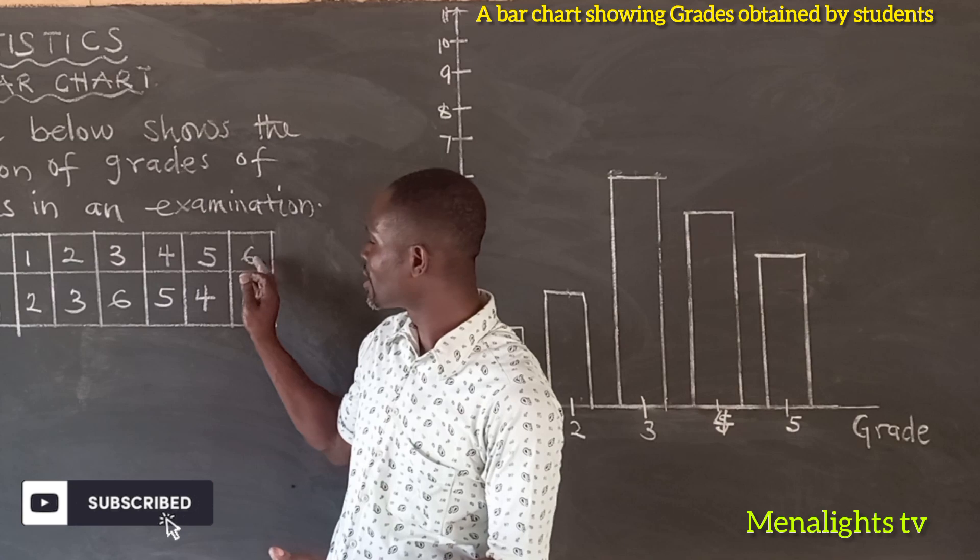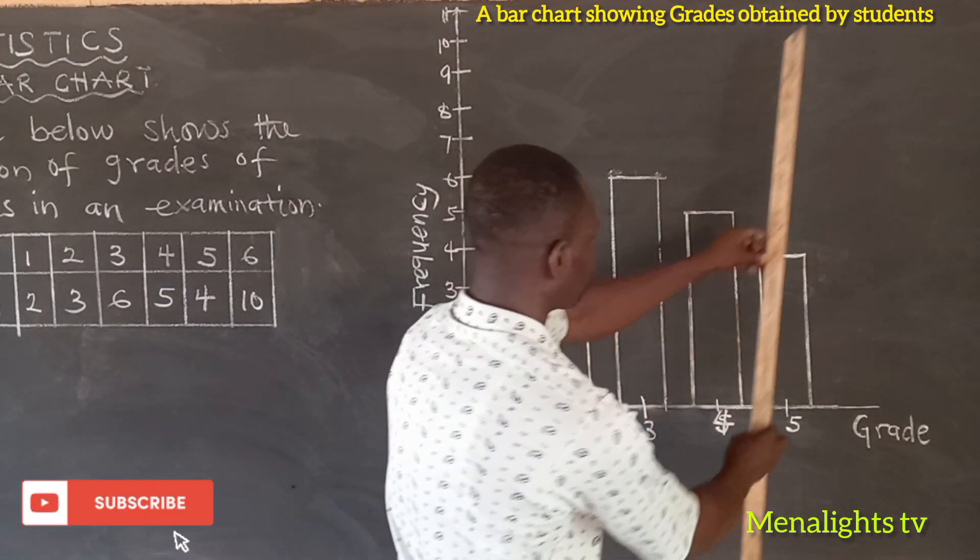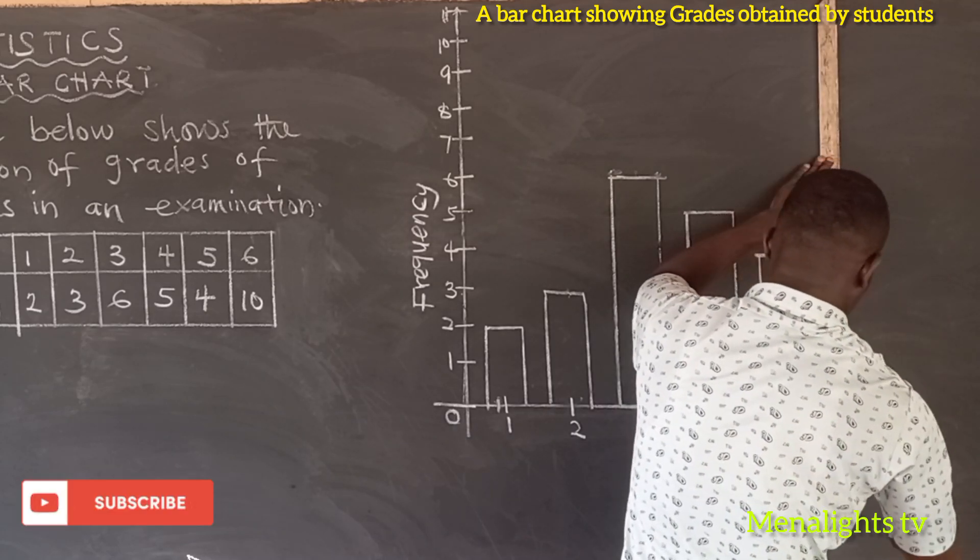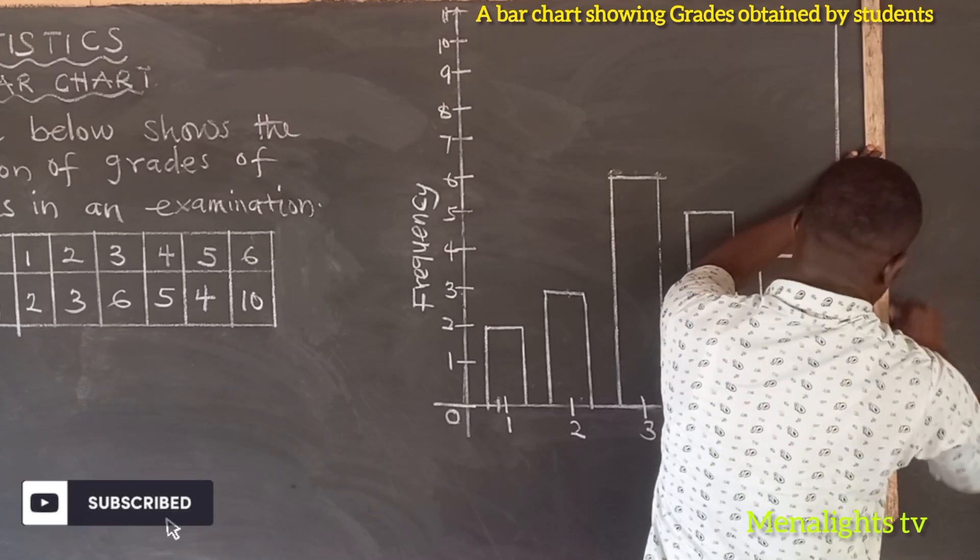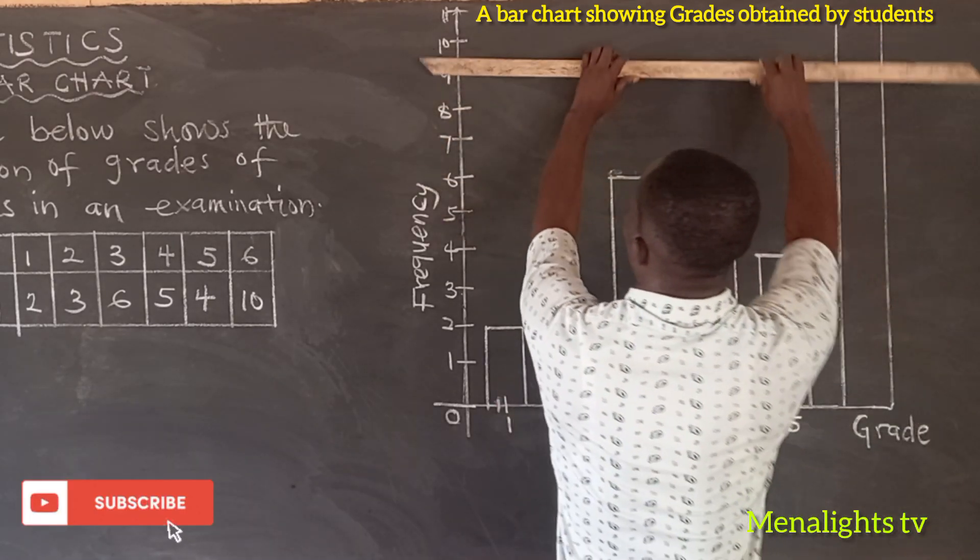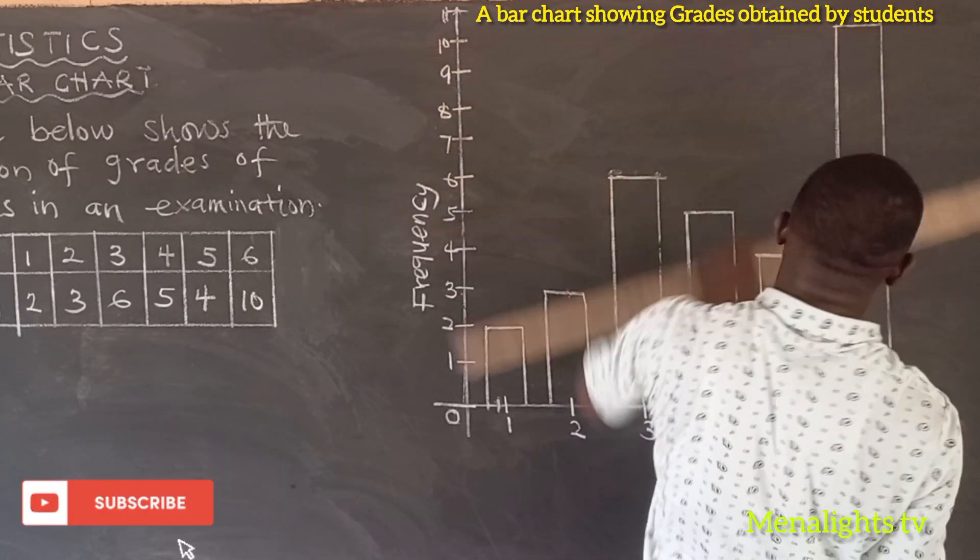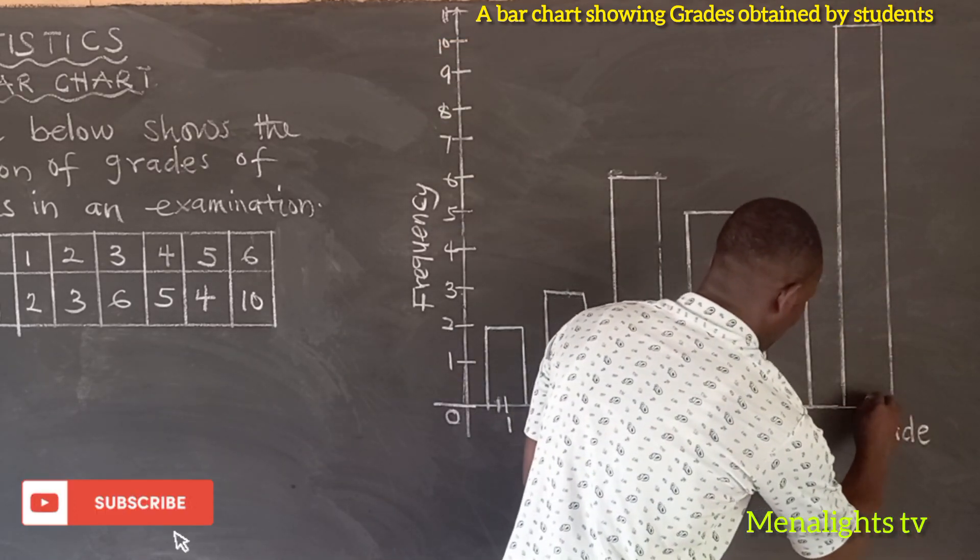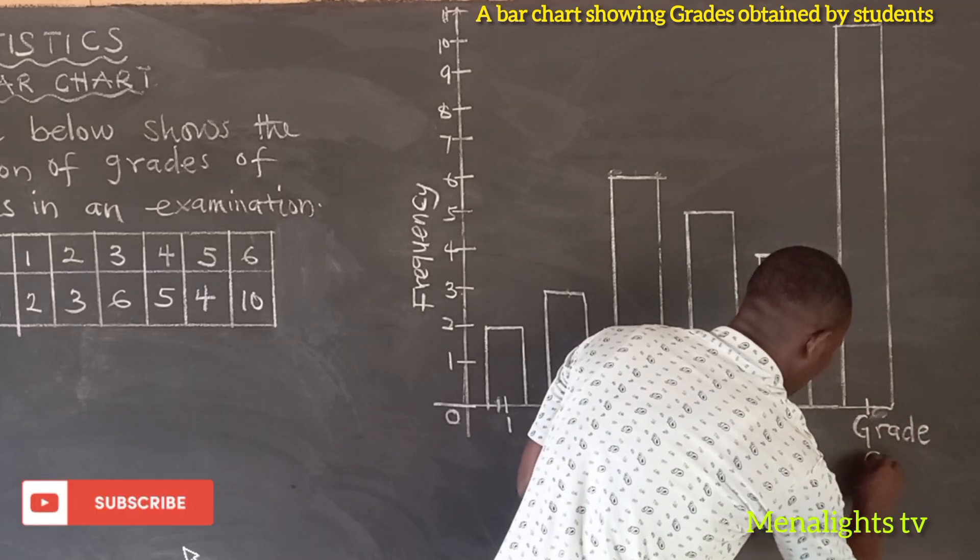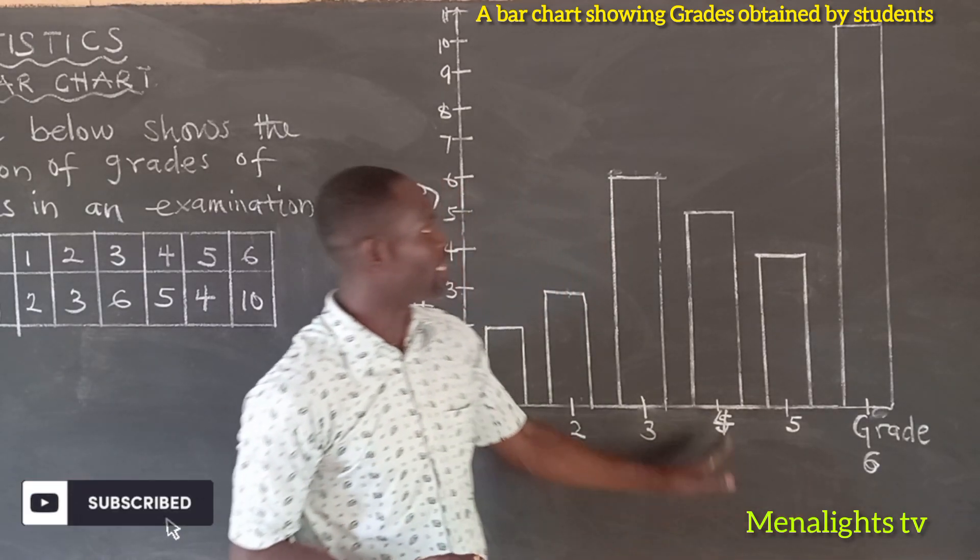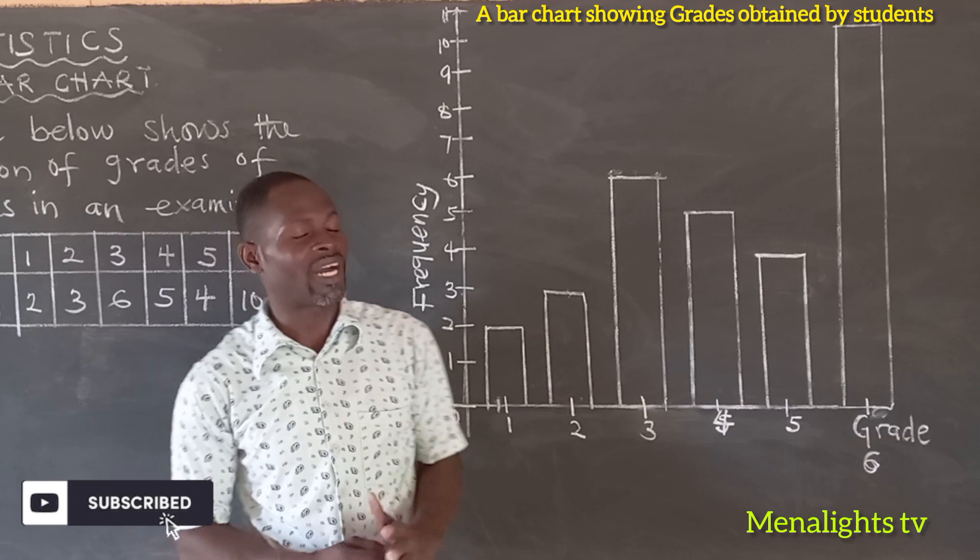Then we move to the grade 6, which is having 10 students. So 10 students obtain that grade. The grade 6 is having a frequency of 10. And this is what we call a bar chart.